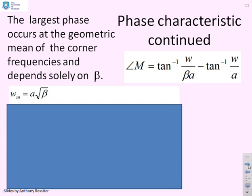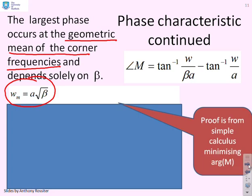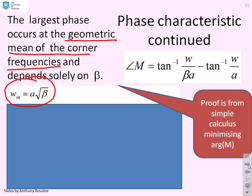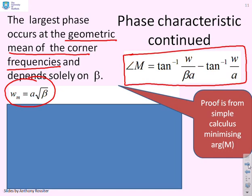Now, where do you get the largest phase dip? Well, you can again prove that this occurs at the geometric mean of the corner frequencies. There's the geometric mean, a root beta. Now, I'm not going to prove it. The proof comes from simple calculus. You take the phase argument here and you simply do your differentiation and find out where the gradient is 0 and you'll find it corresponds to this.